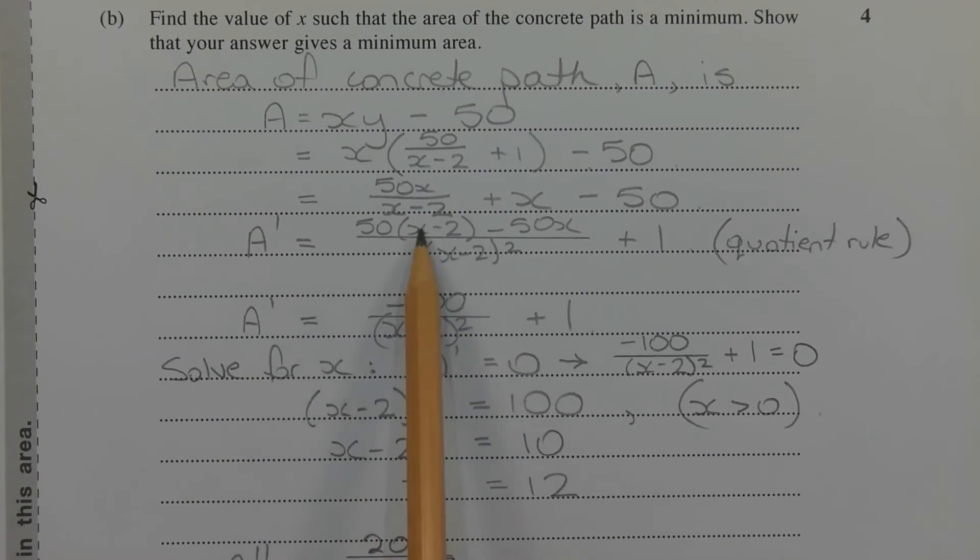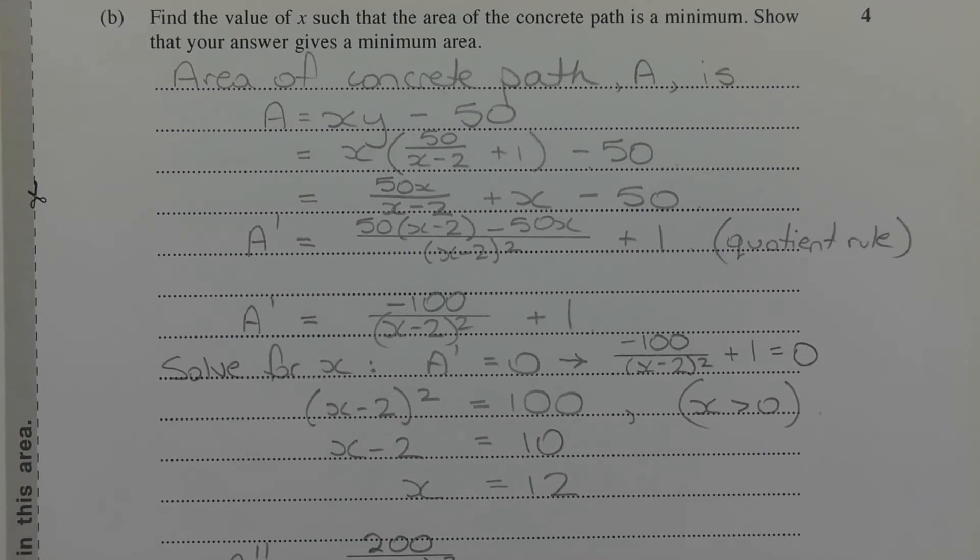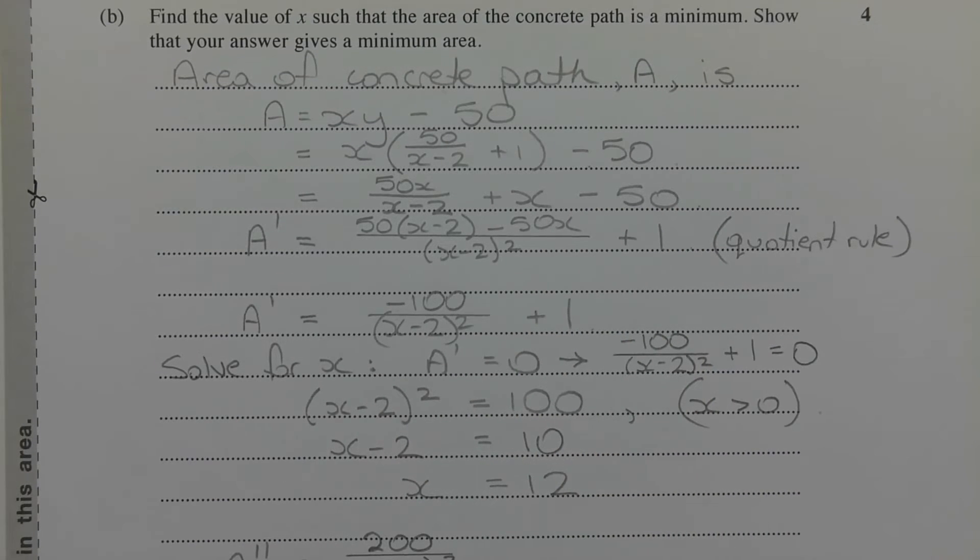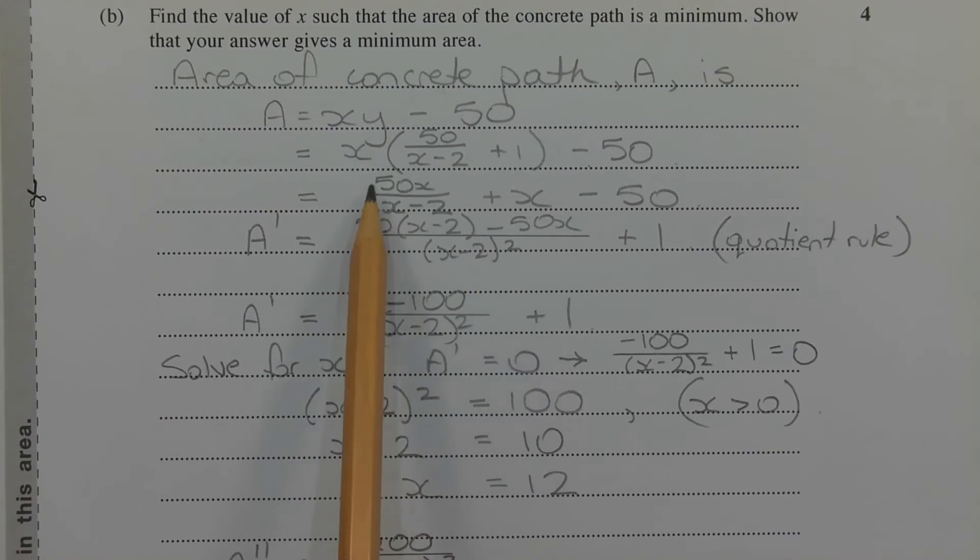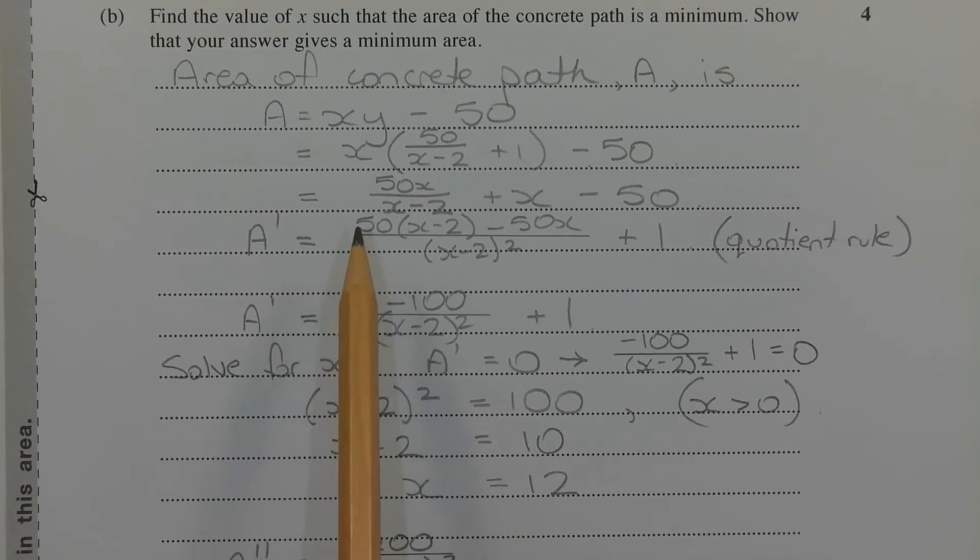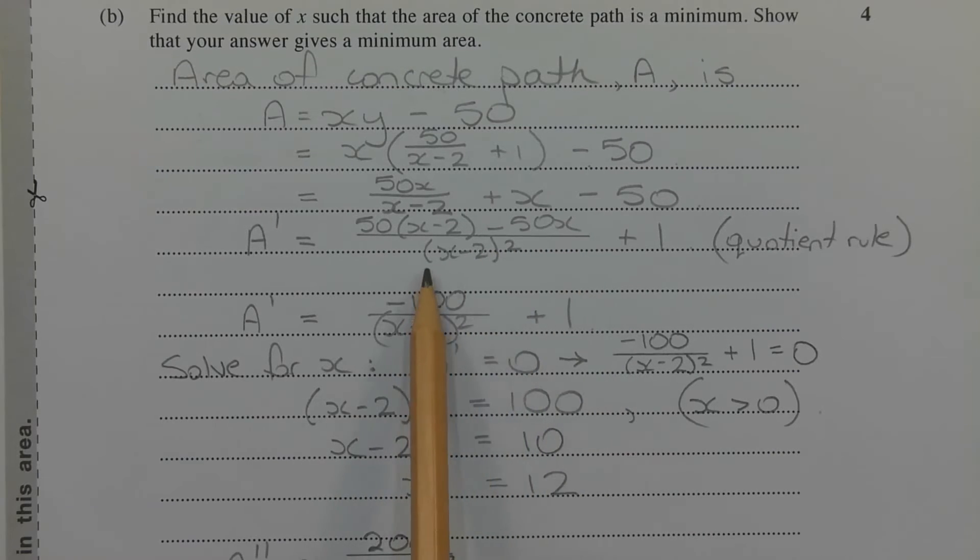Notice that we have a fraction where the numerator and the denominator are both functions in x. So we'll need to apply the quotient rule on the fraction to find the first derivative, A dash. Now before we do that, note that the derivative of x is just 1 and the derivative of a constant is 0. So applying the quotient rule on the fraction, we get A dash is equal to 50 times x minus 2 in brackets minus 50x over x minus 2 in brackets squared plus 1.